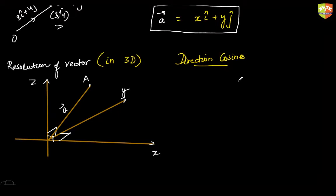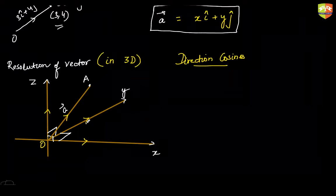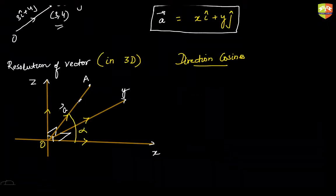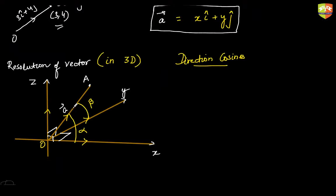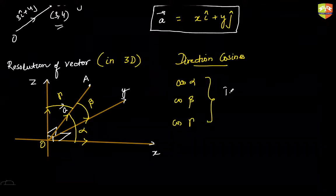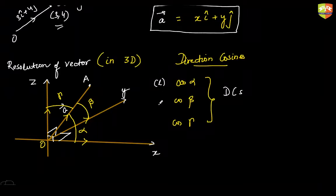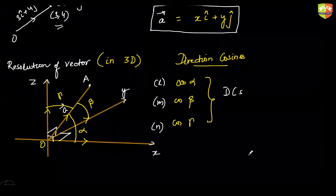Have you heard of this term in school? How do you define direction cosines? The cosines of the angles made by the vector with the x, y, z axes — absolutely correct. So let's say vector a makes angle alpha with the positive x-axis, angle beta with the positive y-axis, and angle gamma with the positive z-axis. The cosines of these angles are called the direction cosines.